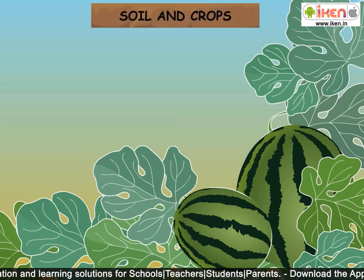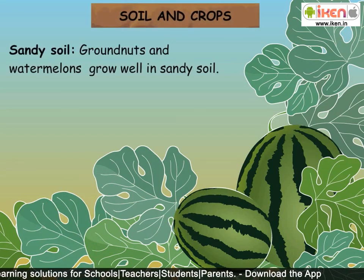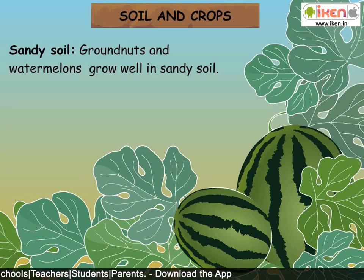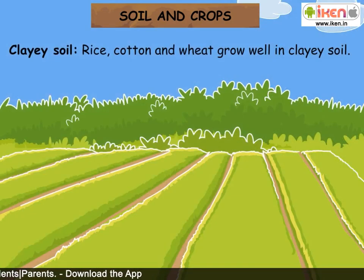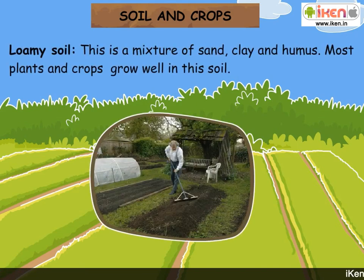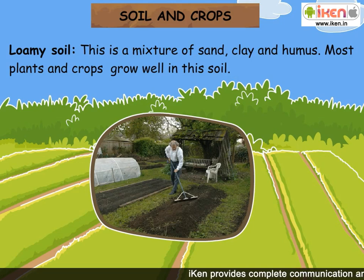Soil and crops: Ground nuts and watermelons grow well in sandy soil. Rice, cotton, and wheat grow well in clay soil. Loamy soil is a mixture of sand, clay, and humus. Most plants and crops grow well in loamy soil.